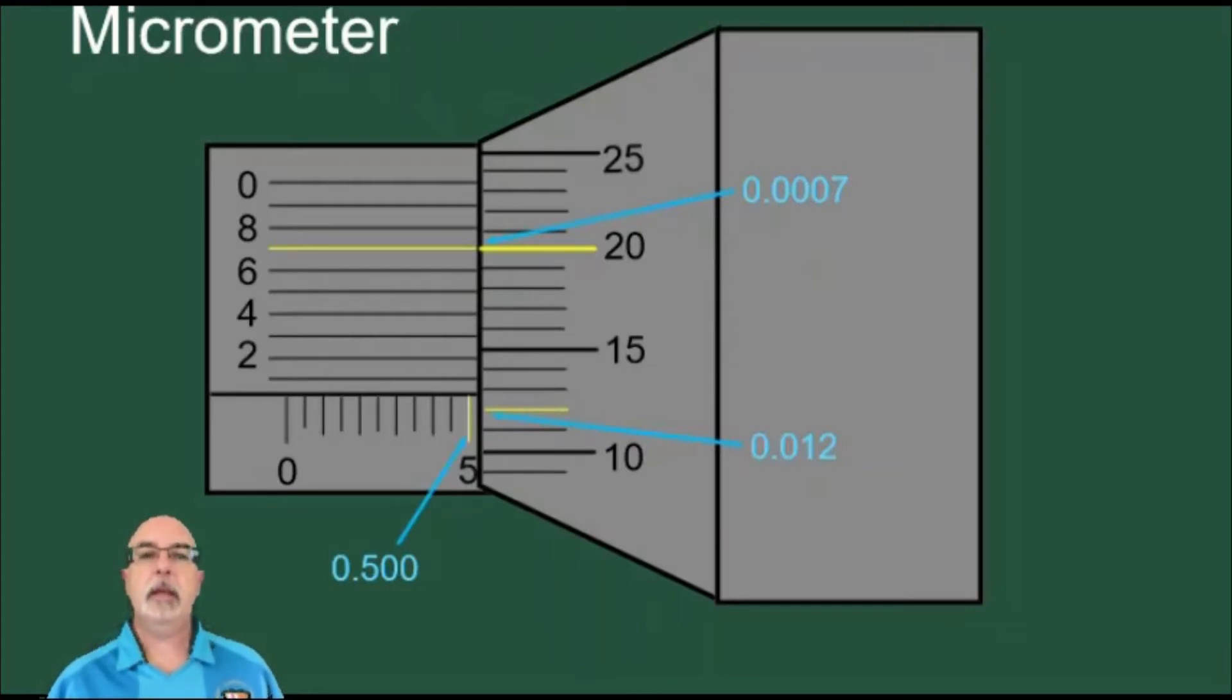There are three scales on the micrometer. The first one on the lower left is the main scale. This one is arranged so that you can see the zero, you can see the five, and you can see these lines here that show where one, two, three, and four would be. These are tenths of an inch.